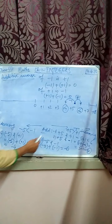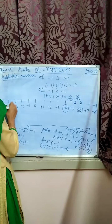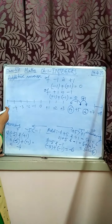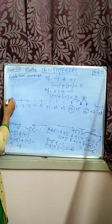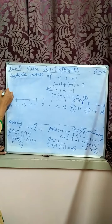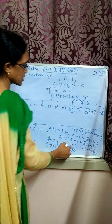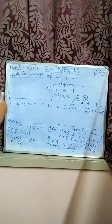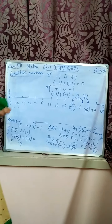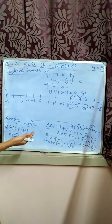Thirdly, there is minus 5 added with minus 1. Here you have minus 5. You are adding minus 1 — going 1 unit in the negative direction. Because there is minus, you are going 1 unit to the minus, that is minus 6. Whenever there is a negative sign, you are going to the left. Whenever there is a positive sign, you are going to the right.